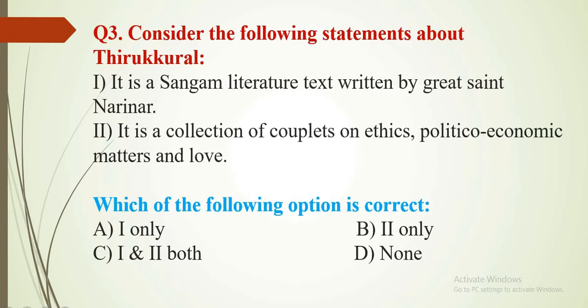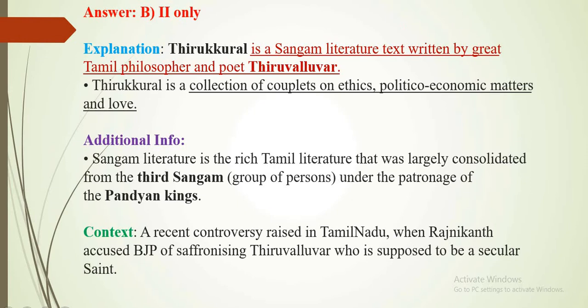Question number 3. Consider the following statements about Thirukkural. Statement 1: It is a Sangam literature text written by the great saint Nareenar. Statement 2: It is a collection of couplets on ethics, political and economic matters, and love. Choose the correct option. Only statement 2 is correct; statement 1 is incorrect. So the answer is B — 2nd only.